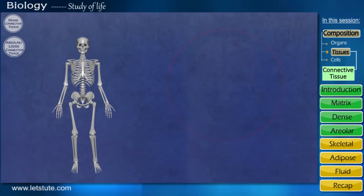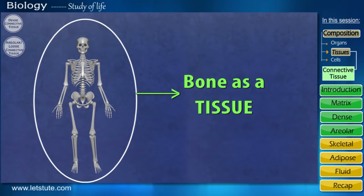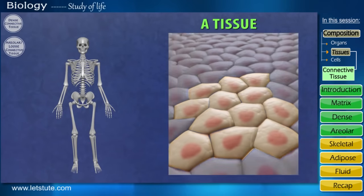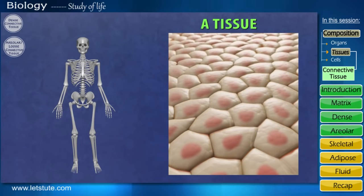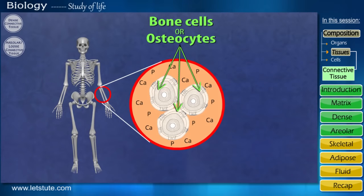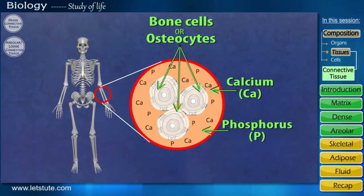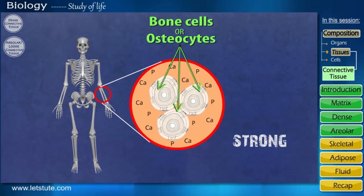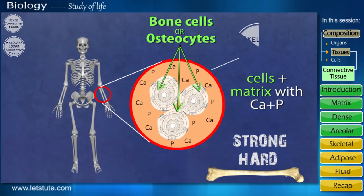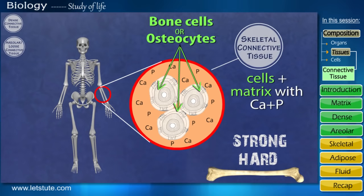It may be difficult to visualize a bone as a tissue, because we've always seen tissue as a layer or group of cells. But bone cells are present in a medium which has calcium and phosphorus, making a bone strong and hard in appearance. Therefore, bone is a type of skeletal connective tissue.